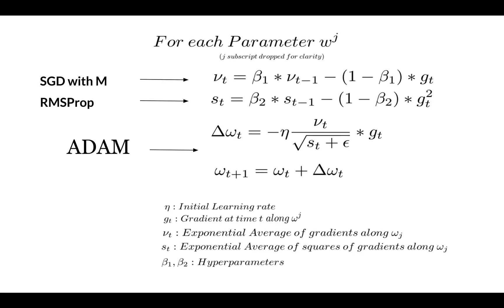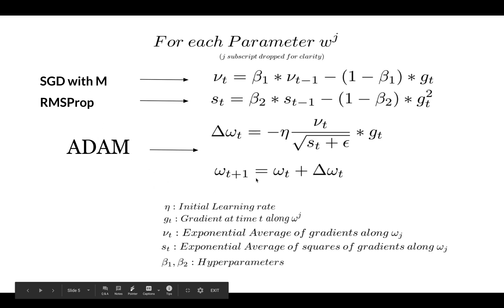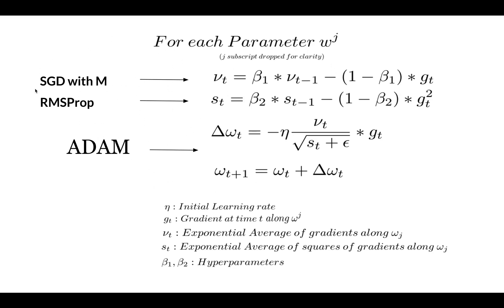The Adam optimizer is an advanced optimizer that uses both SGD with Momentum and RMSProp. For example, beta1 is the learning parameter for the momentum equation and beta2 is the learning parameter for the RMSProp equation. For updating the weight, VT is divided by the root mean square term and multiplied by gt to update the weights.